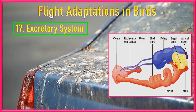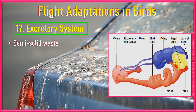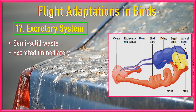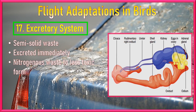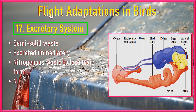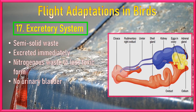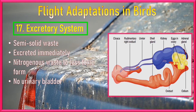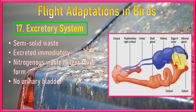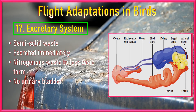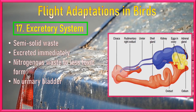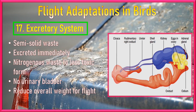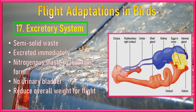Number 17: Excretory System. Birds have adapted to produce semi-solid waste, which is excreted immediately. Nitrogenous wastes are converted to less toxic forms. As an adaptation for flight to reduce weight, birds do not have a urinary bladder. Their body weight is reduced quite substantially due to the absence of a urinary bladder.